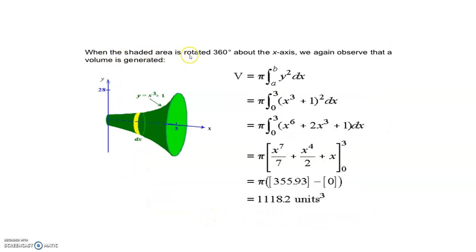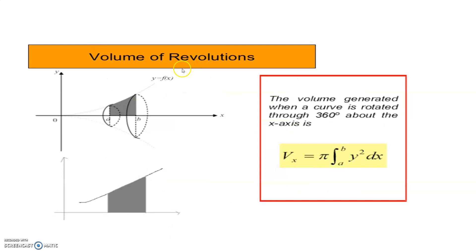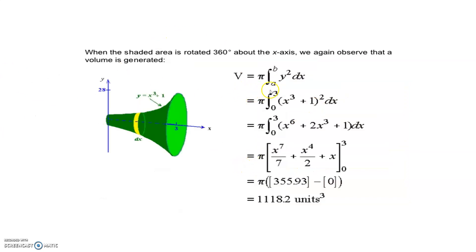When the shaded area is rotated 360 degrees about the x-axis, a volume is generated. We must understand how volume is derived. The volume generated when the curve is rotated through 360 degrees about the x-axis is: Vₓ equals pi times integral from a to b of y squared dx. The volume is a 3D solid, which is why pi is included.